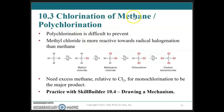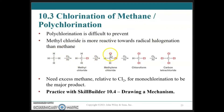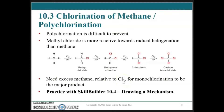Looking at the chlorination of methane, polychlorination is very likely — in fact almost impossible to prevent. Methyl chloride is more reactive towards radical halogenation than methane itself, so a second hydrogen is very easily abstracted. This continues until carbon tetrachloride is formed. The only way to prevent this is to use a large excess of methane relative to chlorine, controlling the outcome statistically by the number of collisions.